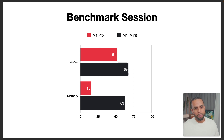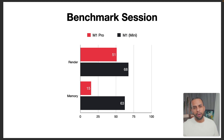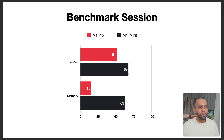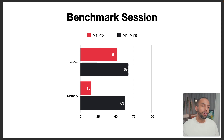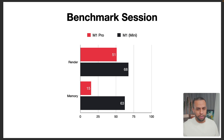Let's take a look at the benchmarking session. We see here we have render, which is CPU, and memory, which is our RAM usage. The M1 Pro and the M1 on this benchmarking session over the average was 51 versus 68 — a little closer than I thought it was going to be. What's very interesting is the memory: 15 to 63 is a huge jump between these two machines. It's actually interesting that they're even that close since the M1 Mini has half the performance cores, and yet the memory usage is much higher.